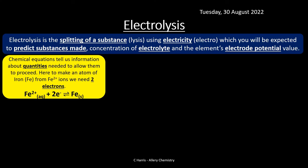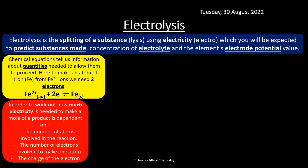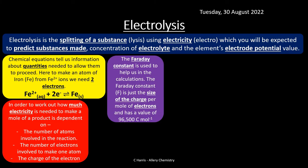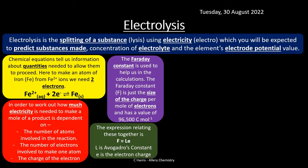Chemical equations tell us useful information about quantities. For example, to make iron (Fe) from Fe²⁺ requires two electrons. To work out how much electricity is needed to make one mole of a product, we consider: the number of atoms involved, the number of electrons per atom, and the charge of the electron. We introduce the Faraday constant F, which is the charge per mole of electrons, with a value of 96,500 coulombs per mole.